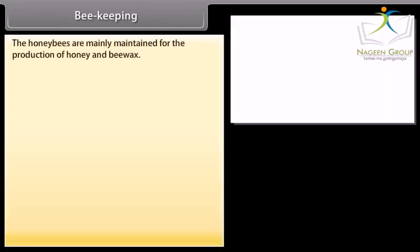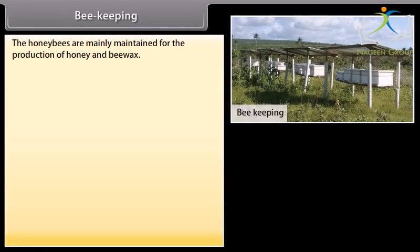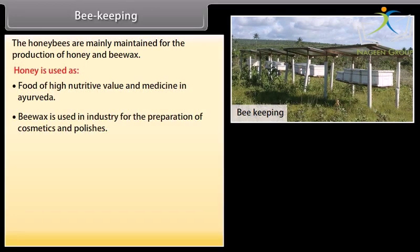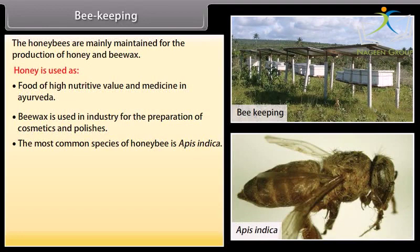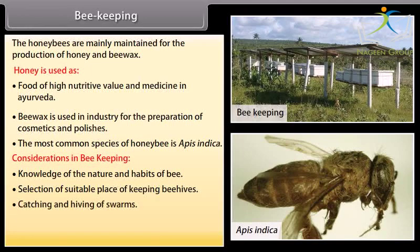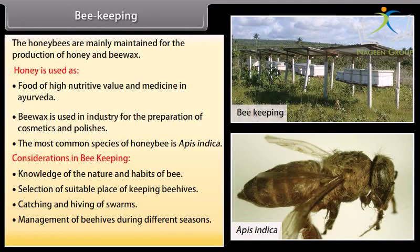Honeybees are mainly maintained for the production of honey and beeswax. Honey is used as food of high nutritive value and as medicine in Ayurveda. Beeswax is used in industry for the preparation of cosmetics and polishes. The most common species of honey bee is Apis indica. Key considerations in beekeeping include knowledge of bee nature and habits, selection of suitable location, catching and hiving of swarms, management during different seasons, and handling and collection of honey and beeswax.